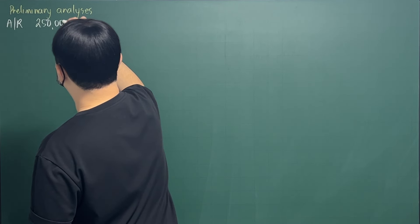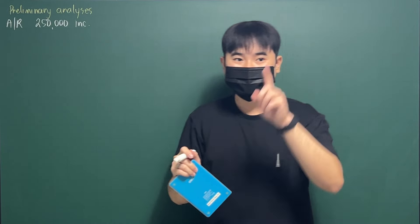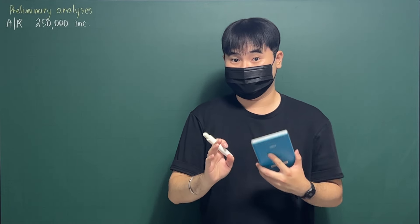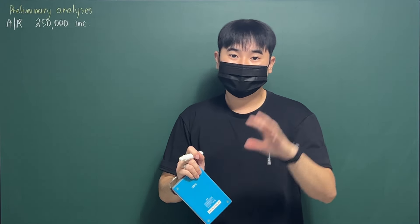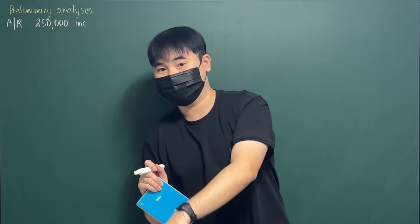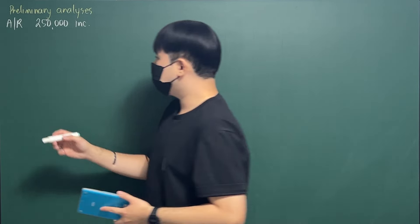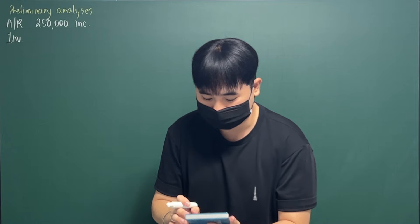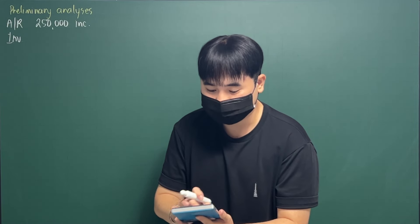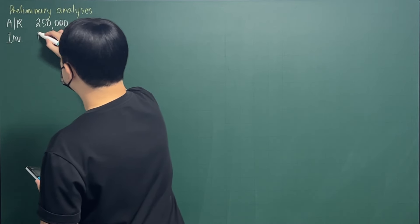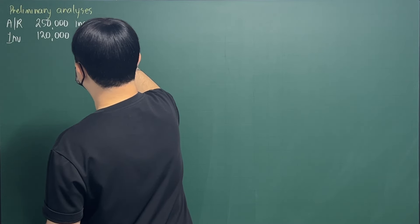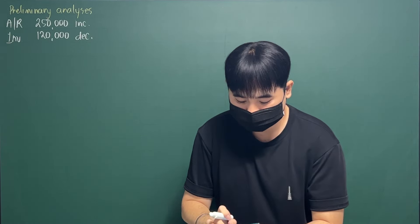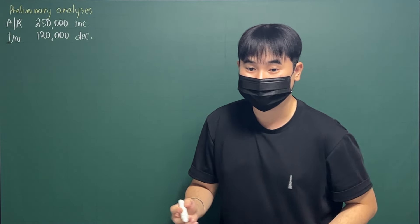I will write $250,000 increase — I'll use 'increase' or 'decrease' rather than plus or minus signs to avoid confusion. For inventory, we have $1,450,000 going down to $1,330,000, which is a decrease of $120,000. For prepaid expenses, from $125,000 going down to $55,000, that is a $70,000 decrease.